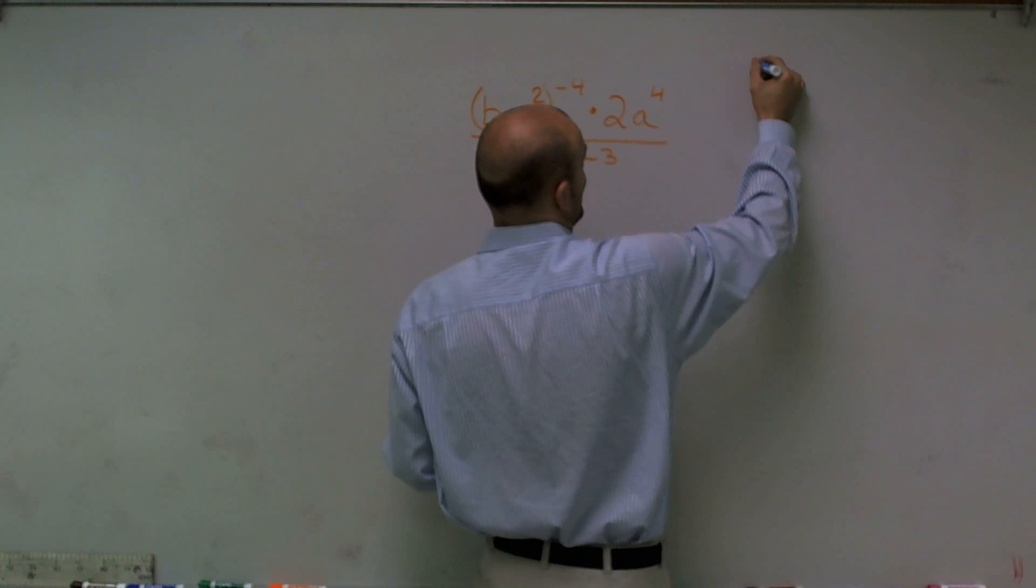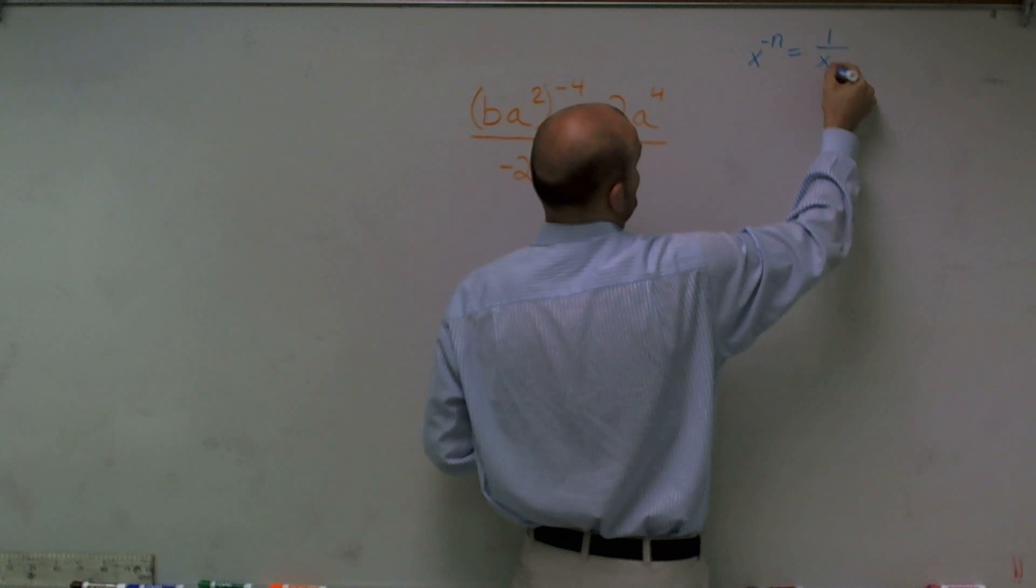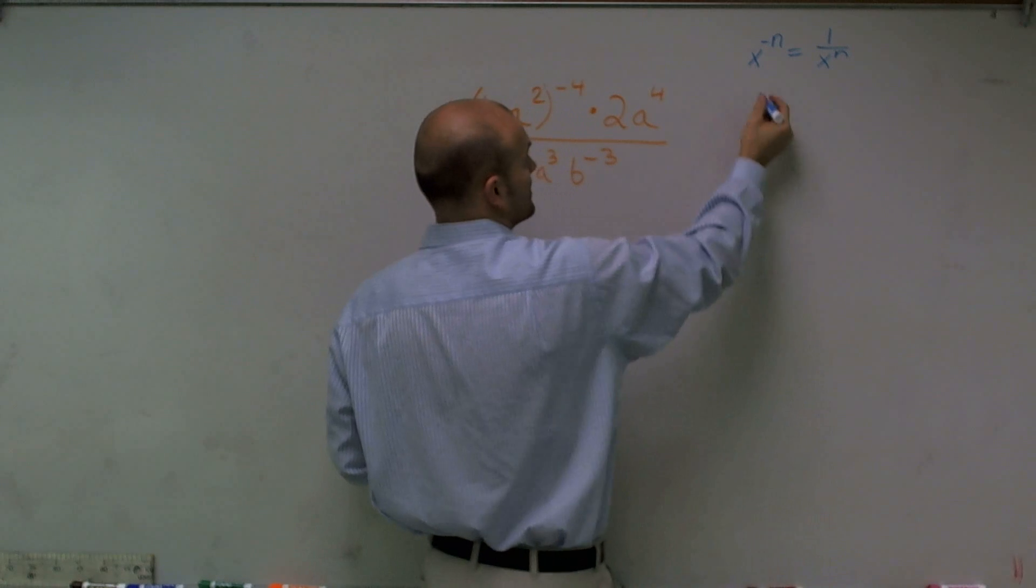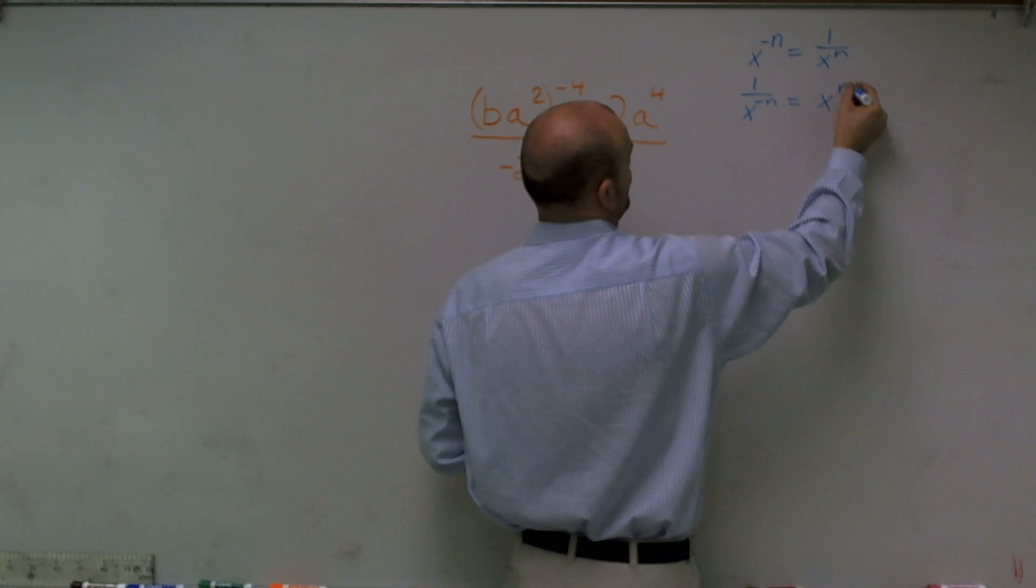Well, the first one is if I have x to the negative n, that is the same thing as 1 over x to the n. And 1 over x to the negative n is equal to x to the n power.